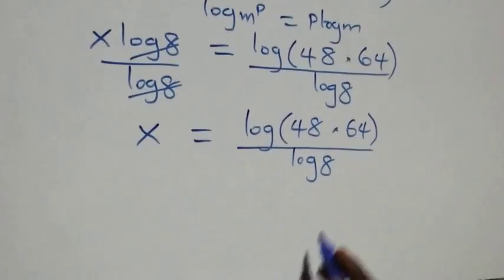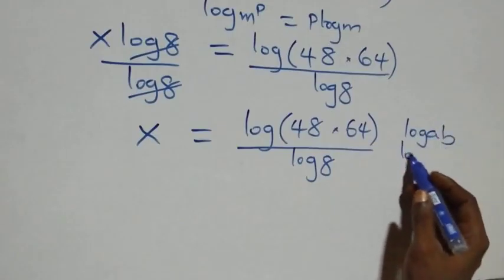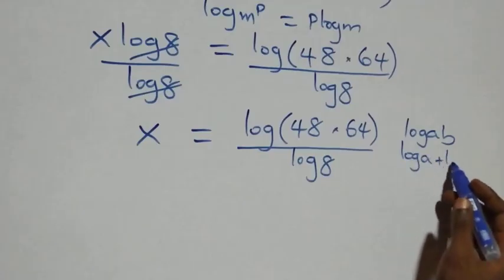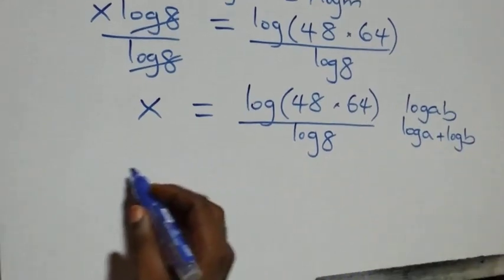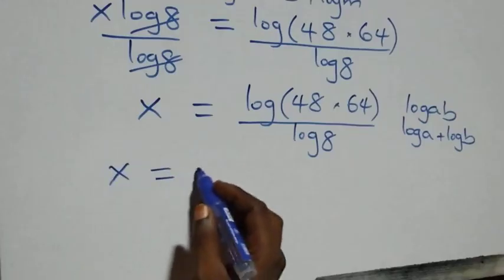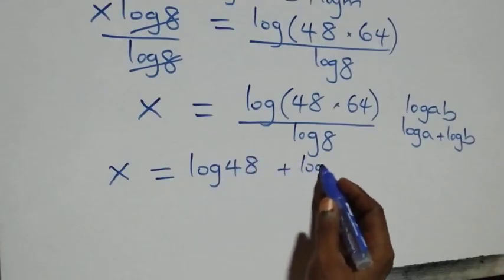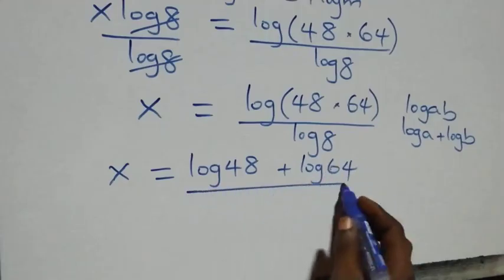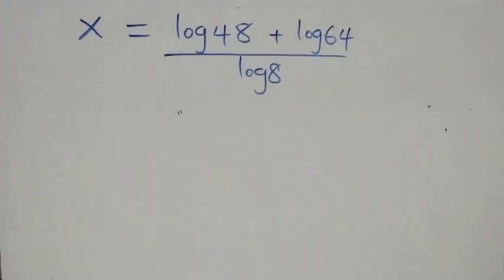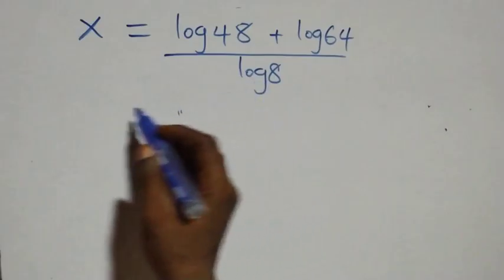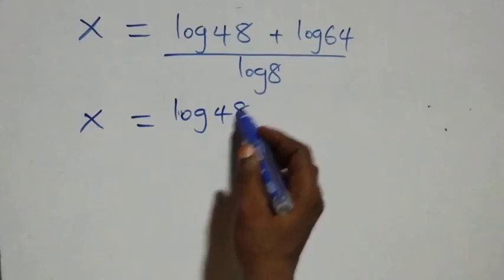This follows the product rule of logarithms: log of a times b equals log a plus log b. So what we have becomes x equals log forty-eight plus log sixty-four, all over log eight. We then separate this into two fractions: x equals log forty-eight over log eight plus log sixty-four over log eight.